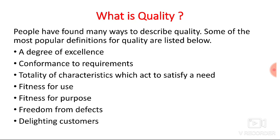So what exactly is quality? People have found many ways to describe quality. We cannot describe quality in a single word; we can define it in a number of ways. Like a degree of excellence — how excellent your product is. Then conformance to requirements — whether it is satisfying the requirement or not. Totality of the characteristics which act to satisfy the needs — whether it is having those desired characteristics.